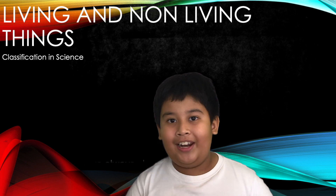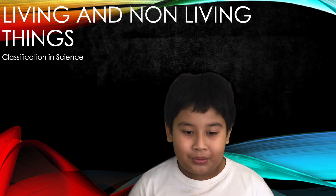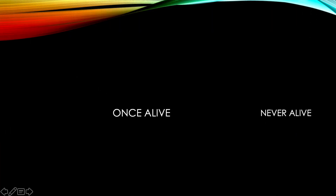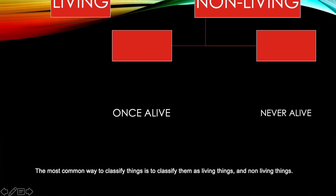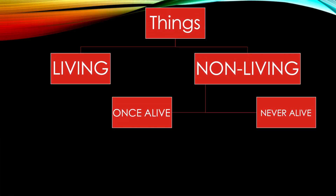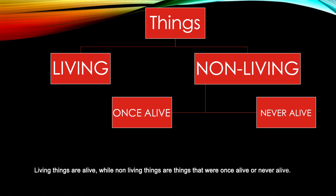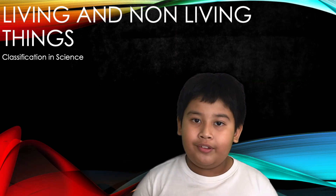We classify animals and other stuff into groups. The most common way to classify things is to classify them as living things and non-living things. Living things are alive,